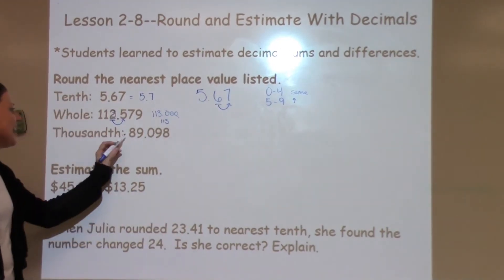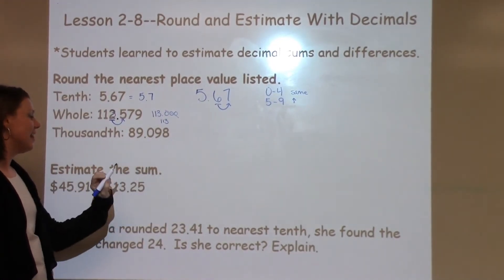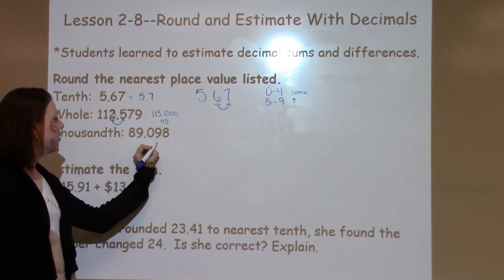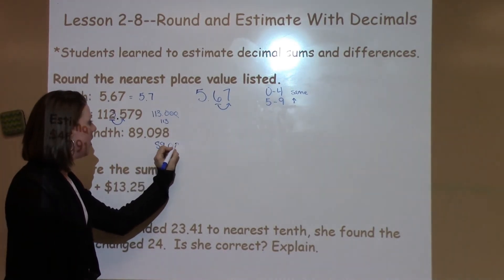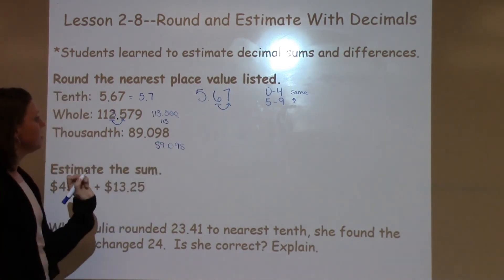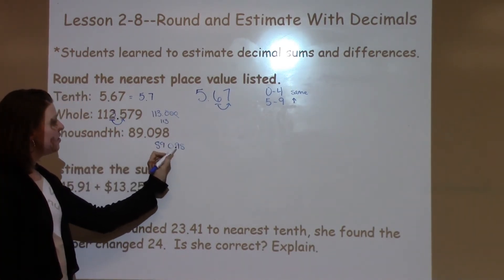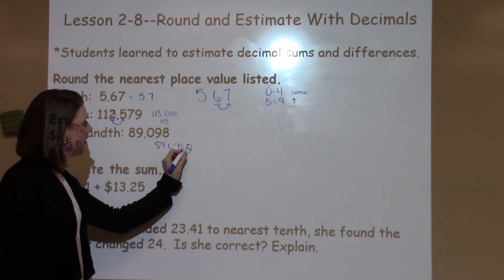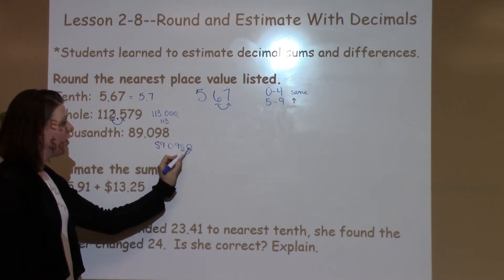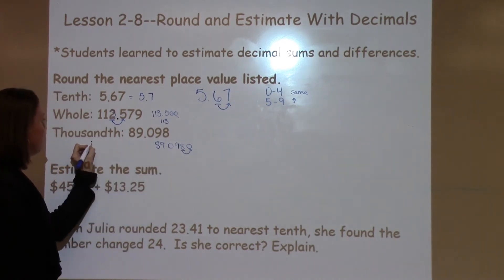The next example is 89.098. Looking at this one, I'm going to write it down. When I look at this one, I need to round this to the nearest thousandth. So I've got tenths, hundredths, thousandths. When I look at this one, there's nothing here, so this is going to just stay exactly the same. So I've got 89.098.